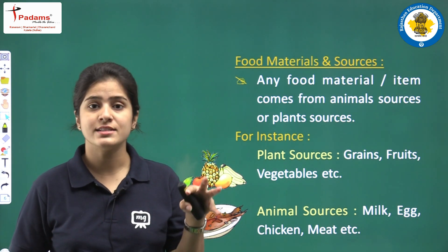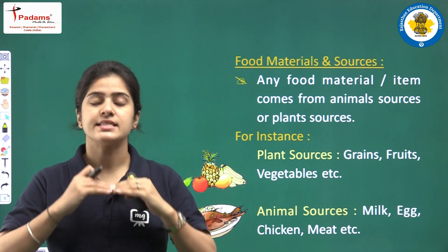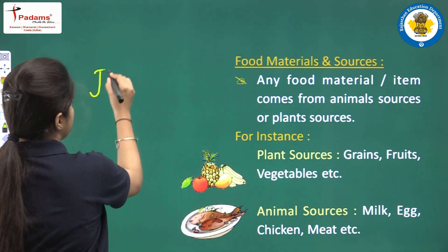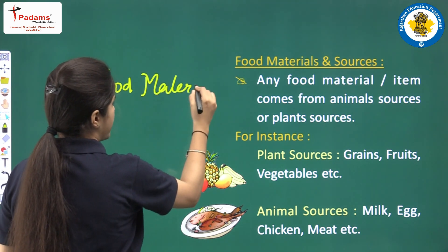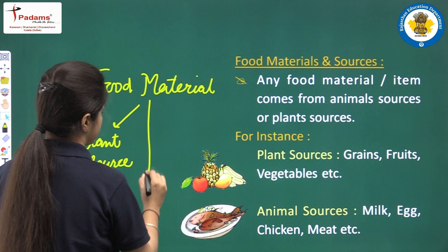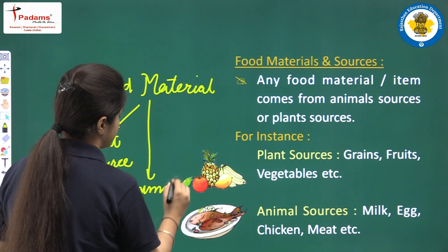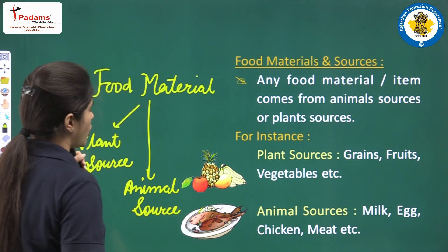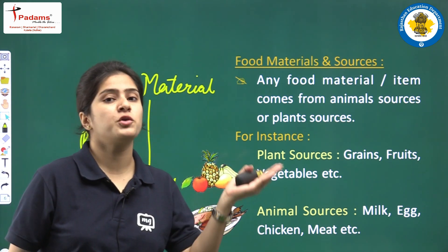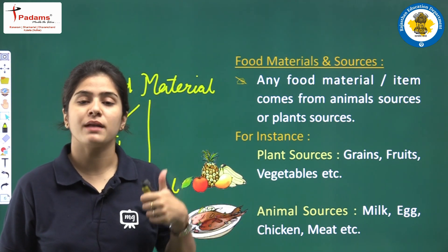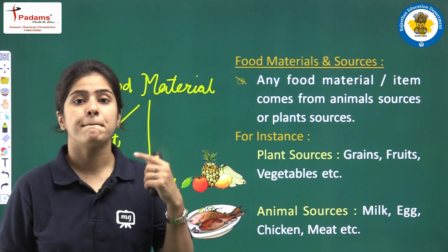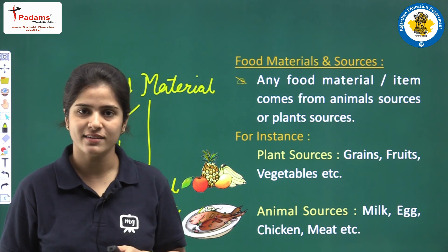Next, we will be discussing about food materials and sources. Any kind of food material is either a product of an animal source or a product of a plant source. Sources are the things from where food materials are derived. Plant sources include grains, fruits, vegetables, etc. Animal sources include milk, cream, egg, chicken, mutton, and many things like that.